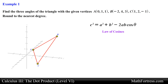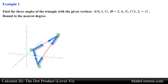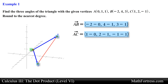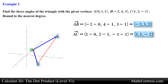For this problem we are going to do something a little different and actually use vectors to find the angles. Using points A, B, and C to denote the angles of the triangle, we will find the components of the vectors that form each angle. Let's start with angle A. This angle is formed by vector AB and vector AC, so we use the points to find the component form of each vector. Carrying out the subtraction we obtain the components of vector AB and AC respectively.